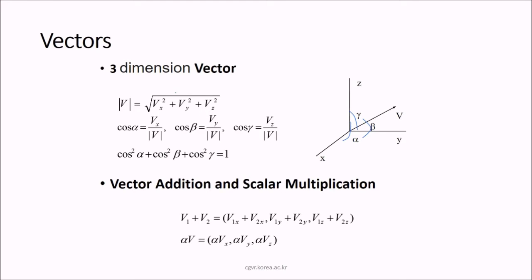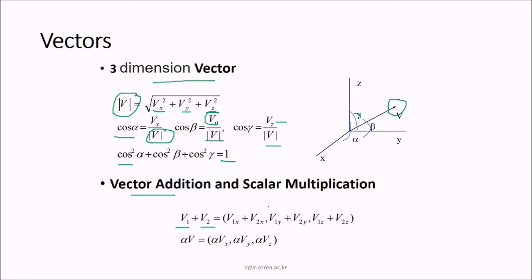For a 3D vector, we have components vx, vy, vz. The magnitude is √(vx² + vy² + vz²). The direction cosines are: cos(α) = vx/|v|, cos(β) = vy/|v|, cos(γ) = vz/|v|. Squaring and adding these cosines gives 1. Vectors can be added component-wise (x, y, z addition) and multiplied by a scalar α to give (α·vx, α·vy, α·vz).